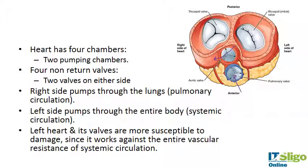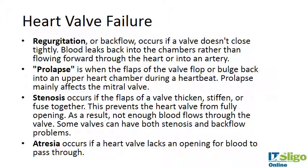The left side of the heart works hard, pumping a lot of blood against the system, and over time the valves can get stressed and damaged, especially on the left side. Blood can start to regurgitate or backflow if the valve doesn't close tightly enough — these valves may weaken over time, stop closing tightly, and blood leaks back into the chambers rather than flowing forward. Prolapse is when the flaps of the valve flop or bulge back into an upper heart chamber during a heartbeat.